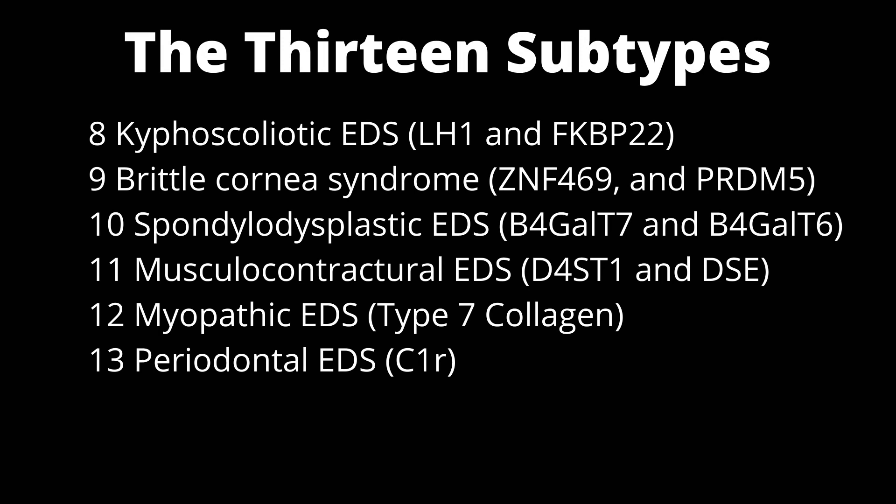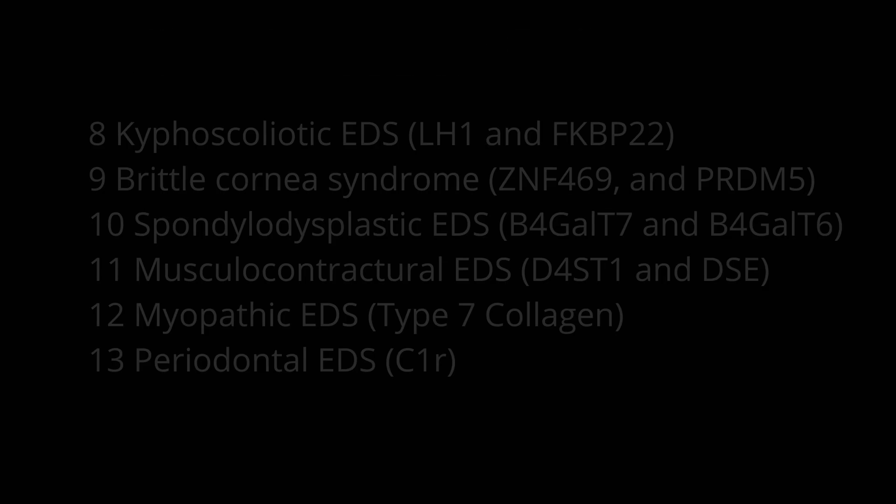Brittle cornea syndrome affects ZNF469 and PRDM5 genes. Spondylo-dysplastic EDS affects B4GALT7 and B4GALT6 genes. Musculocontractual EDS affects D4ST1 and DSE. Myopathic EDS affects type 7 collagen. Finally, periodontal EDS affects the C1R gene.